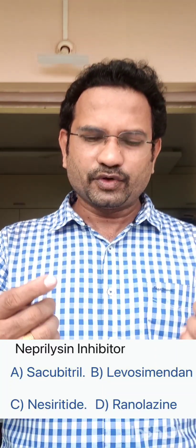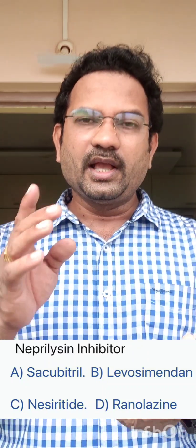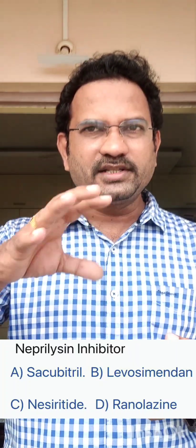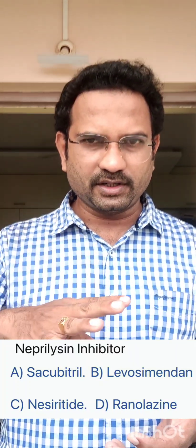Neprilysin also metabolizes bradykinin, which causes vasodilation. So if you inhibit neprilysin, sodium excretion increases and vasodilation occurs. These agents are used to treat severe hypertension or congestive heart failure. The neprilysin inhibitor is sacubitril.